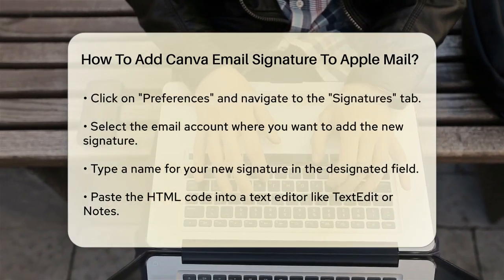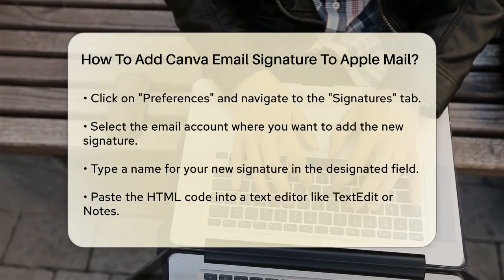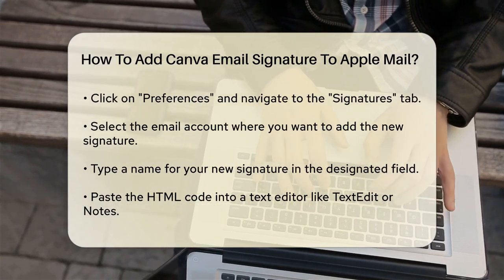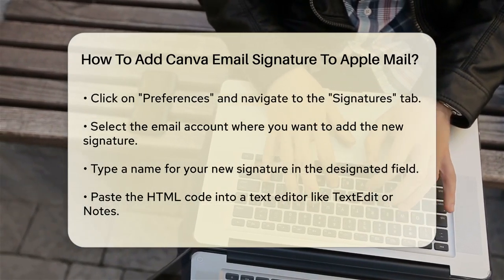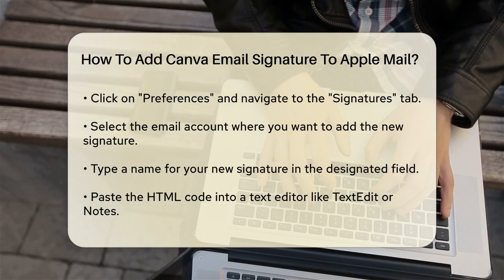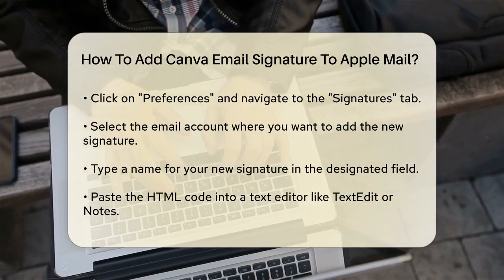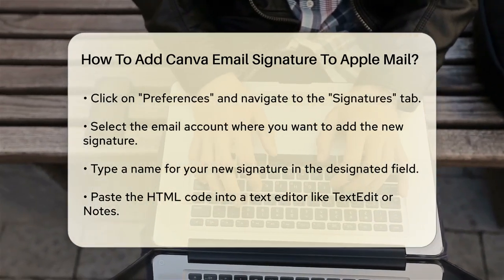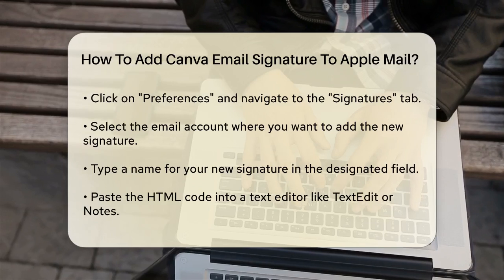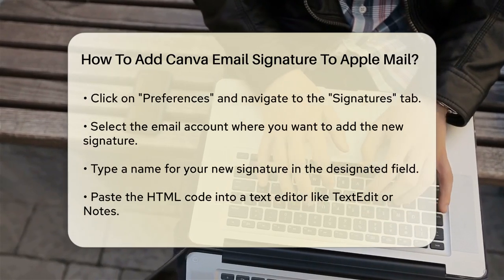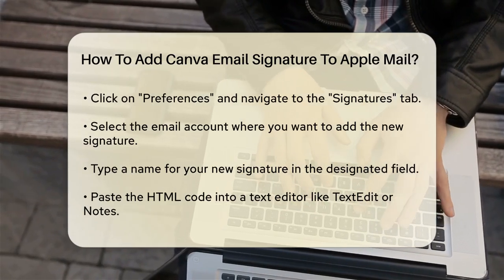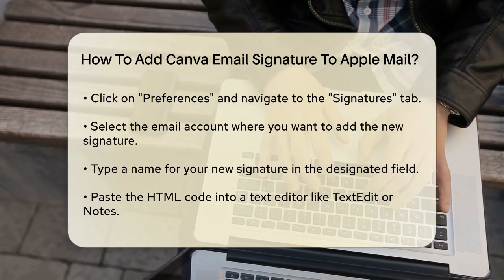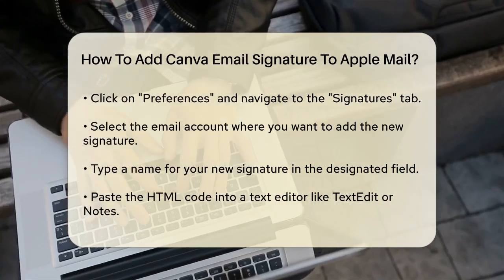Here, you'll see a list of your email accounts on the left. Select the email account where you want to use the new signature. If you see all signatures selected, you'll need to drag your new signature to the desired email account later. Click below the middle column where it says Signature and type a name for your new signature. This name will appear in the Signature pop-up menu when you write a message.